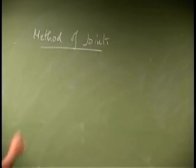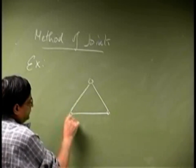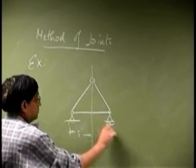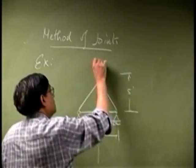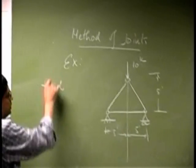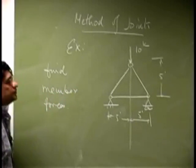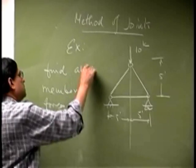We will look through two different examples. The first one is the sigat truss. It has a force of 10 kips. For this truss, the question is to find all the member forces.